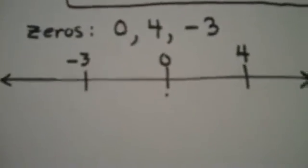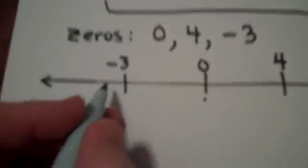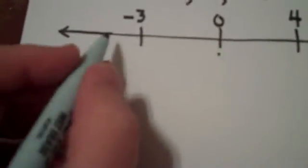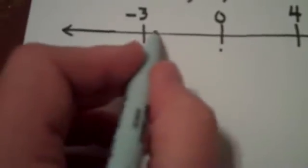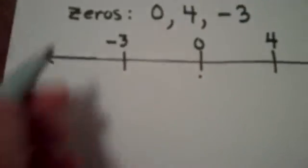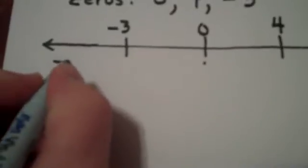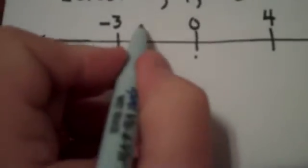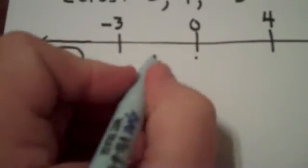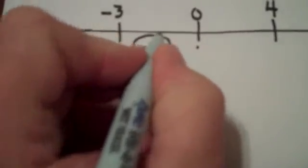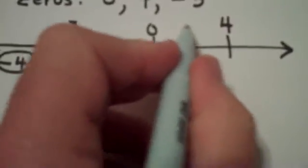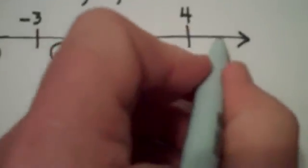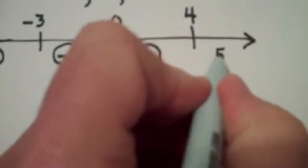And then what I've taught my students to do is to pick a test value from each region. And in this case, you see, we have one, two, three, four regions to test. From the first region, I'll pick a test value of negative four. From this next region, I'll pick a test value of negative one. From this other region, this third region, I'll pick a test value of one. And from the last region, I'll pick a test value of five.